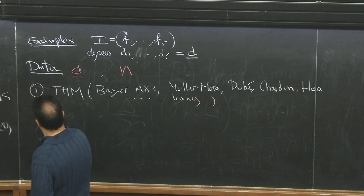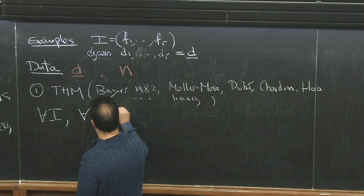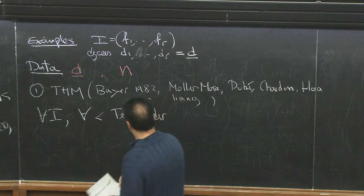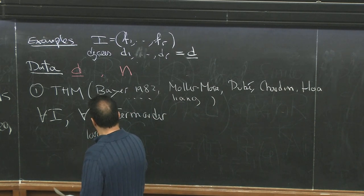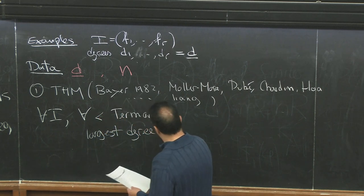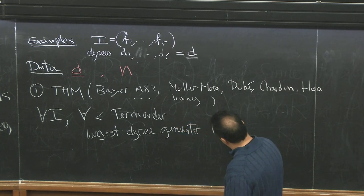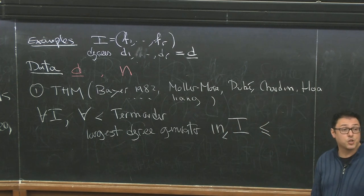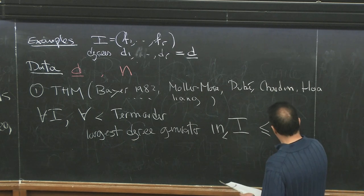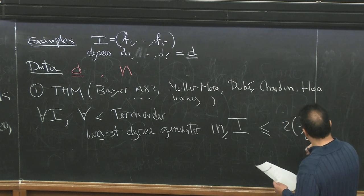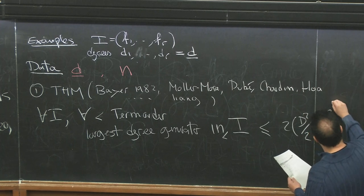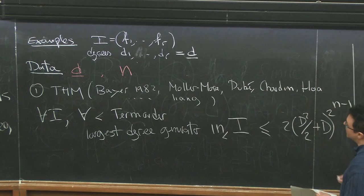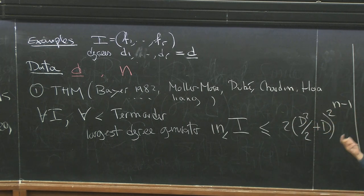The result is this one: for every ideal and for every term order, the size of the Gröbner basis is under control. Basically, the largest degree of a minimal generator in the initial ideal with respect to this term order of I is bounded above by a double exponential function of D and N. I'm going to write the Dubé version: D squared over 2 plus D to the 2 to the N minus 1. So it's a double exponential in D and N. That's the first result of fixing the data, the invariant is size of the Gröbner basis, and here is the bound.